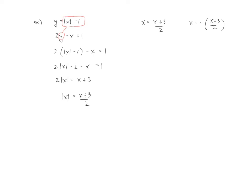Solving both equations separately: from the first, 2x equals x plus 3, which gives x equals 3. For the second, multiplying both sides by negative 2 gives negative 2x equals x plus 3, so 3x equals negative 3, meaning x equals negative 1.